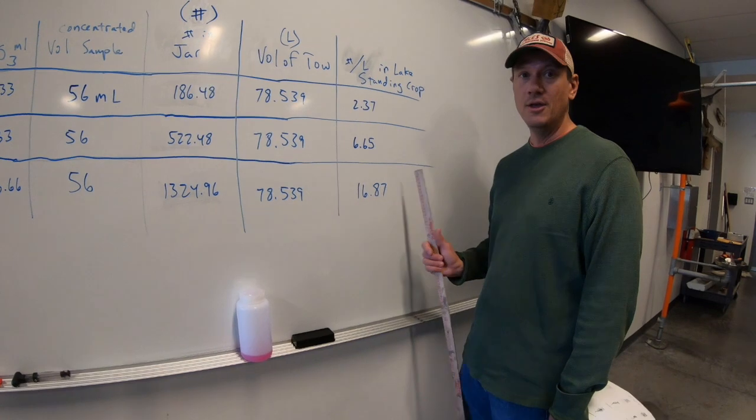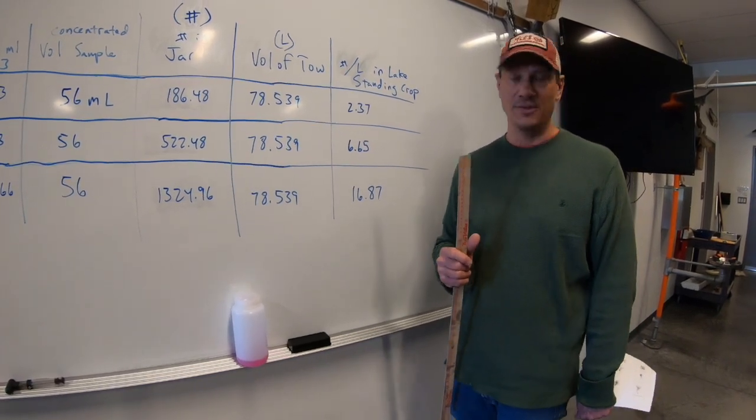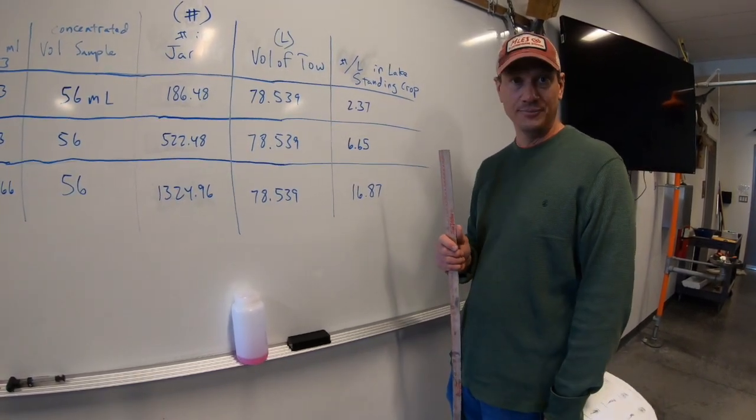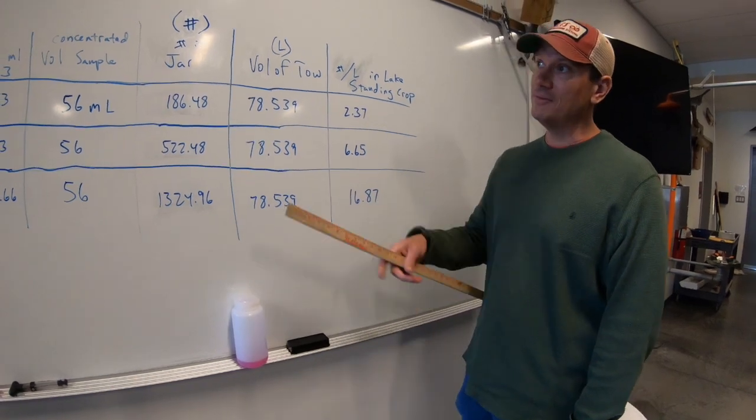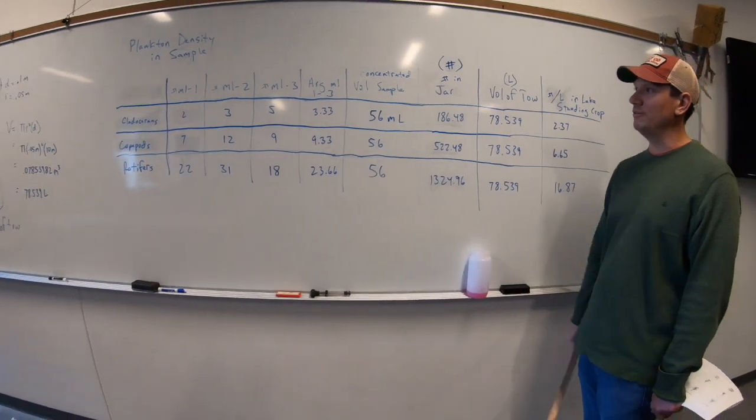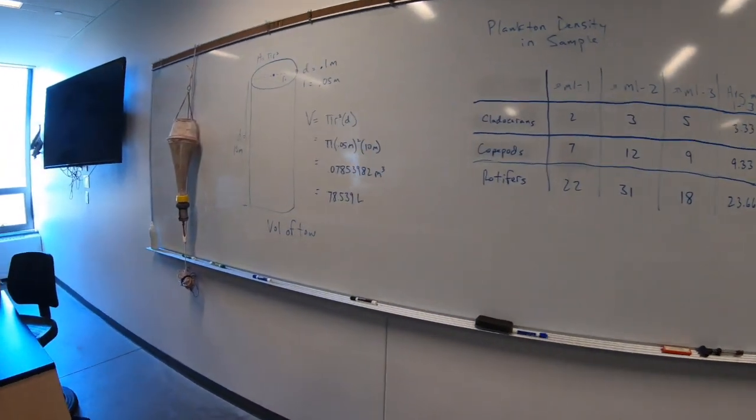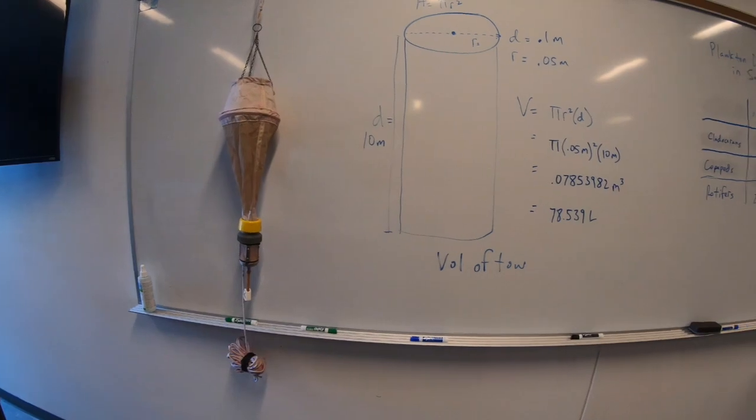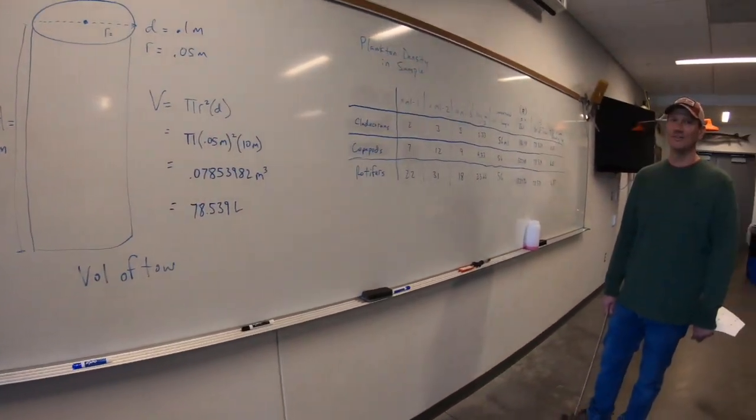Like, rotifer country would be up there in an acid lake with no hardness. So that's how you calculate plankton density. And that's how you do it, folks. If you have any questions, let us know.